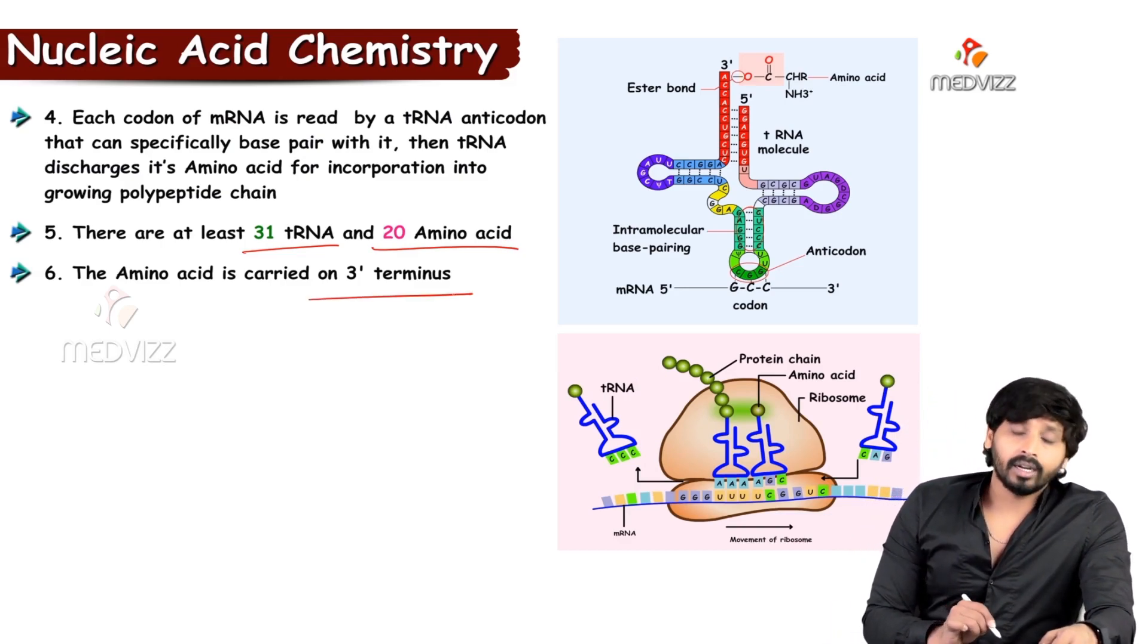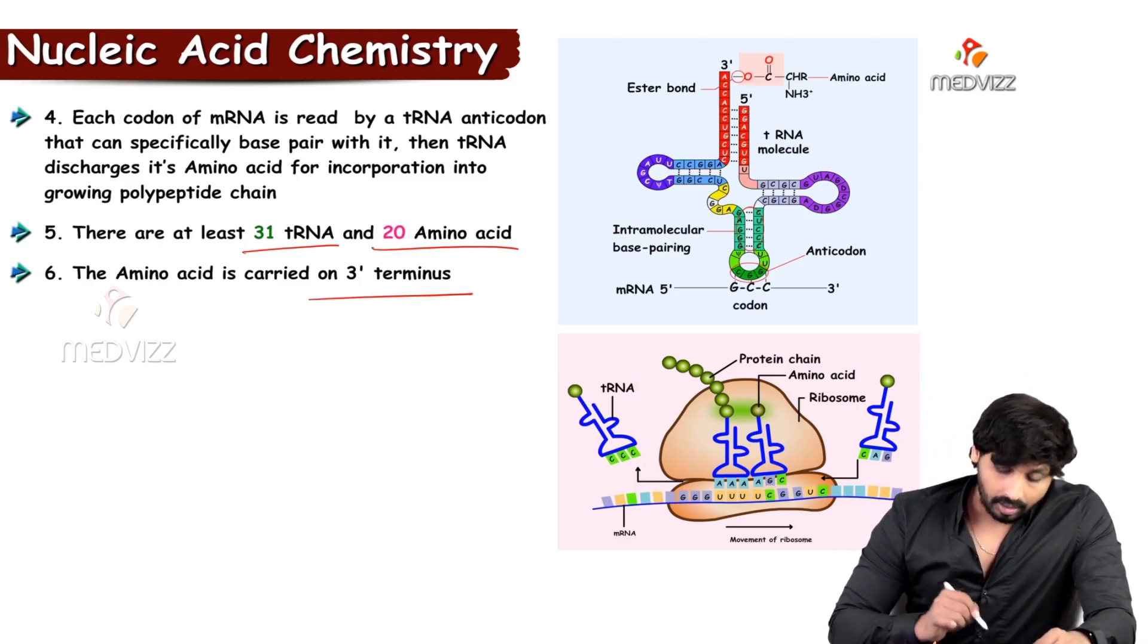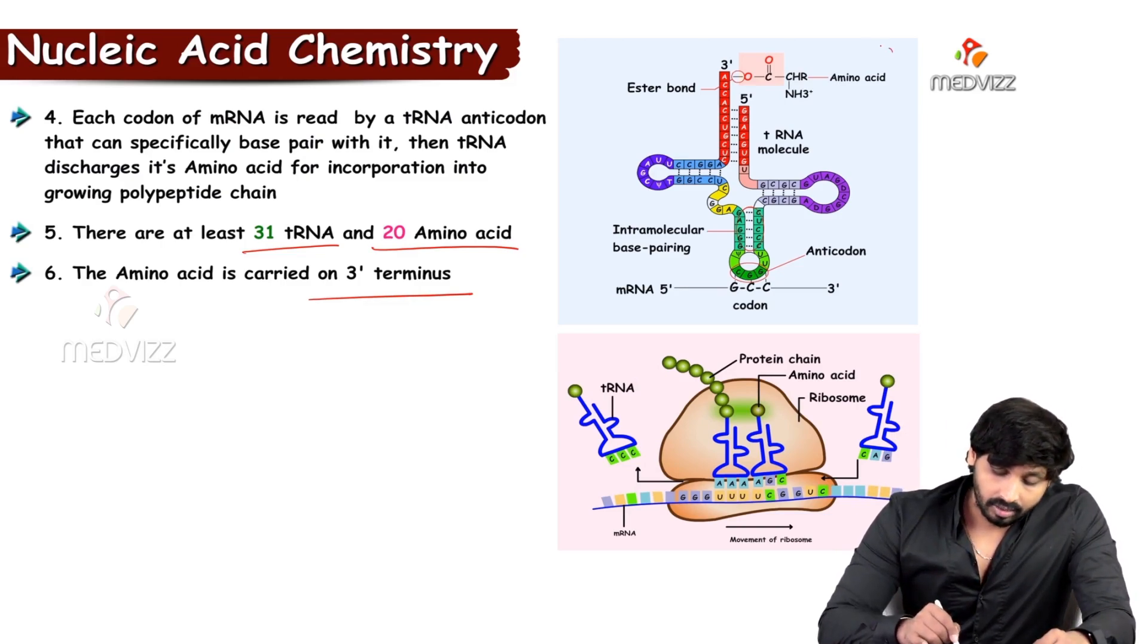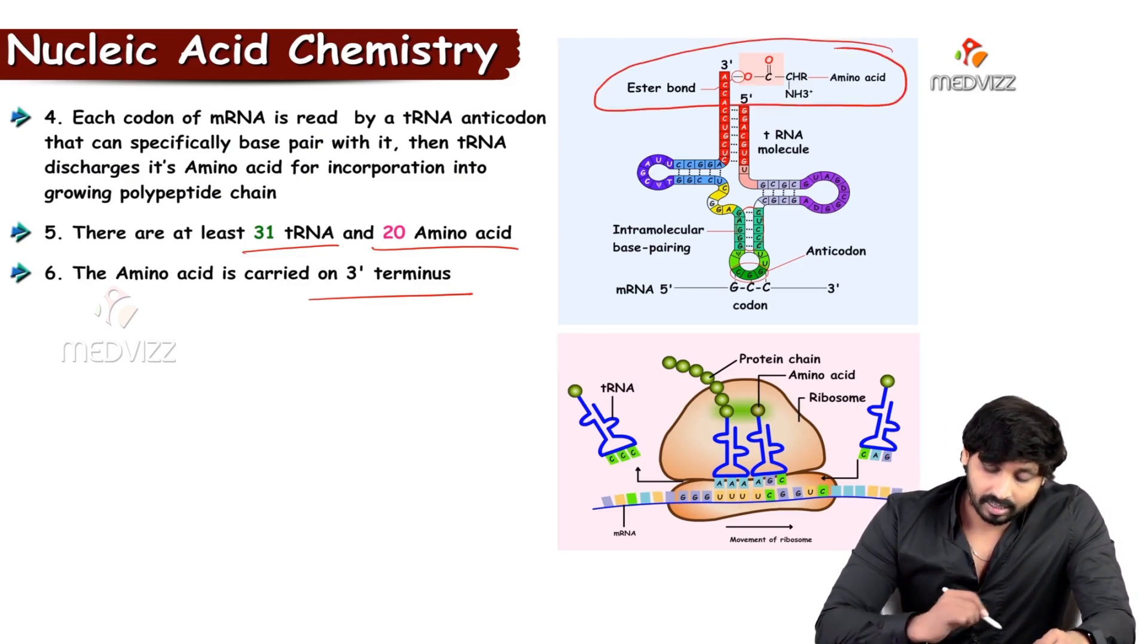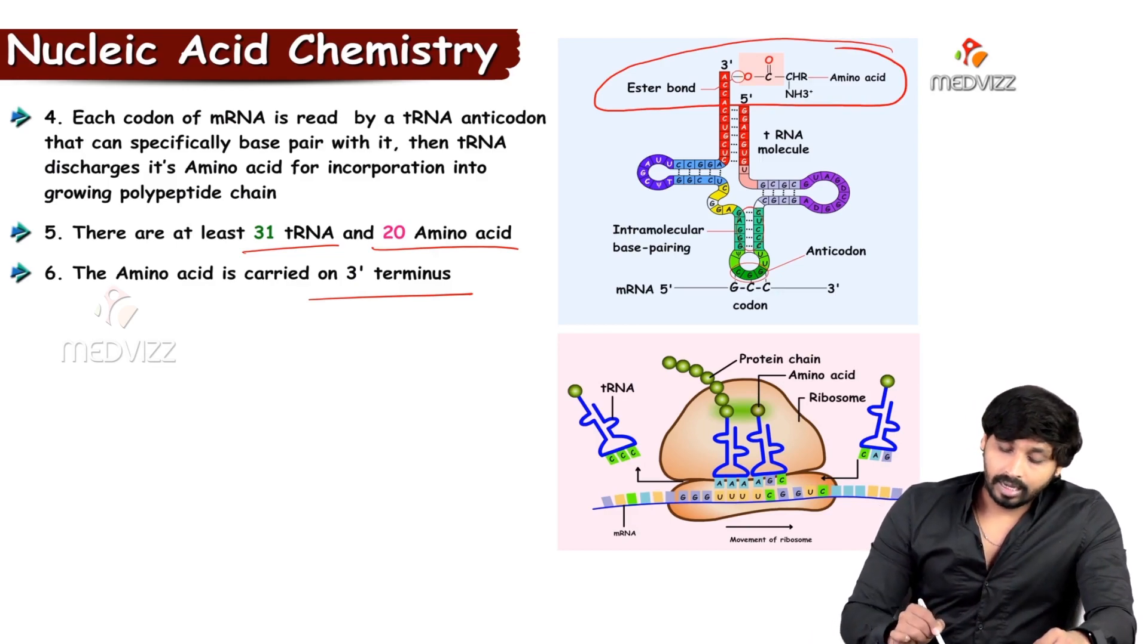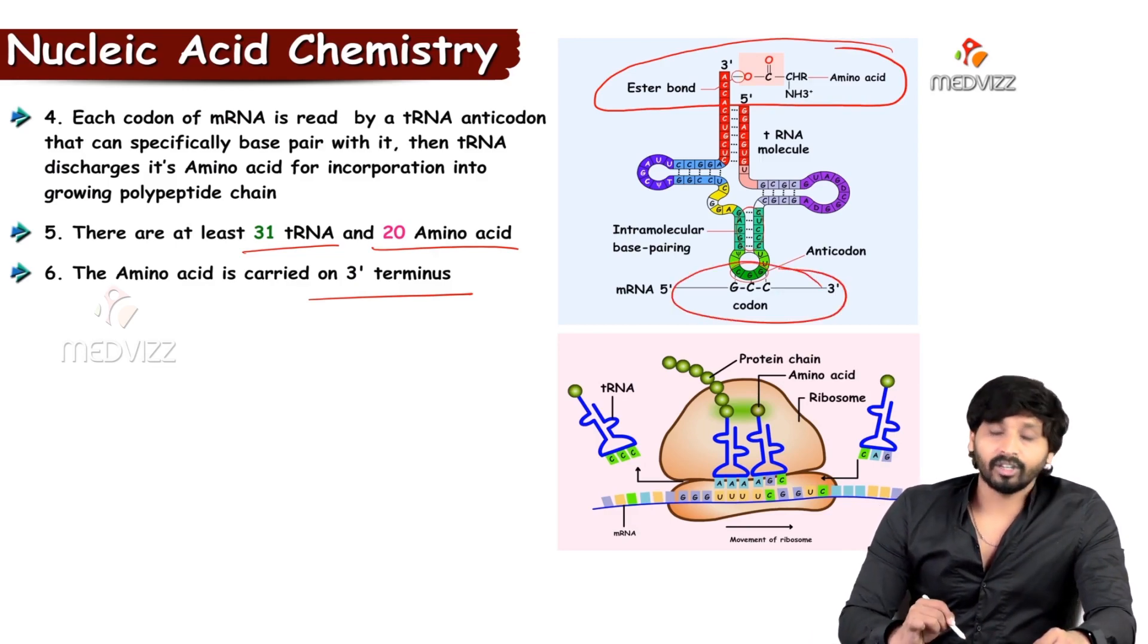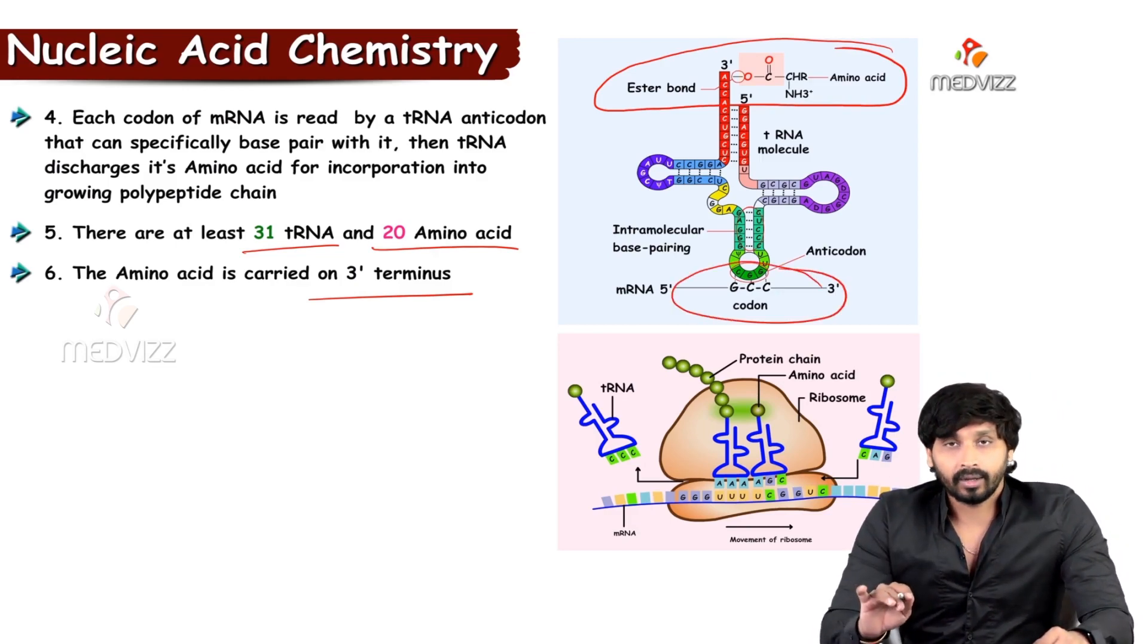Amino acid, where it will be carried? It will be carried at the 3 prime terminus. You see here, this is the terminus where amino acid will be carried, and this anticodon loop is helpful in attachment of tRNA to the mRNA.